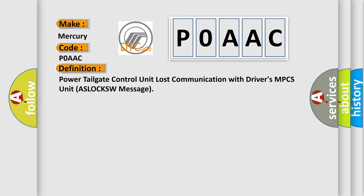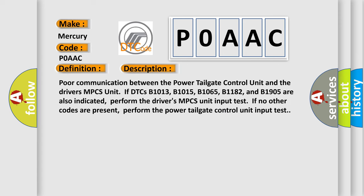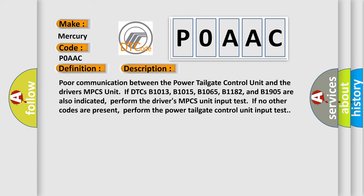Here is a short description of this DTC code: Poor communication between the Power Tailgate Control Unit and the Driver's MPCS Unit. If DTCs B1013, B1015, B1065, B1182, and B1905 are also indicated, perform the Driver's MPCS Unit Input Test. If no other codes are present, perform the Power Tailgate Control Unit Input Test.